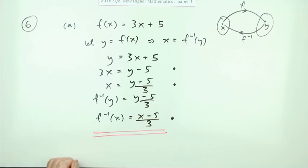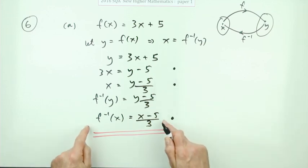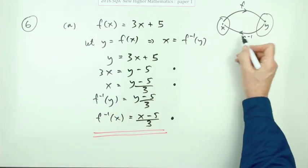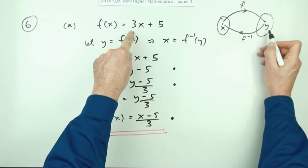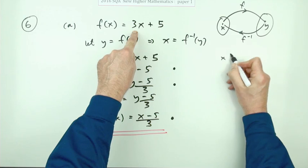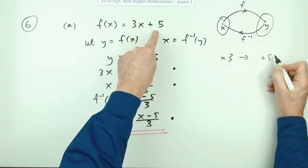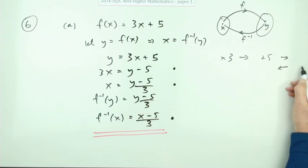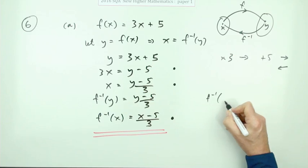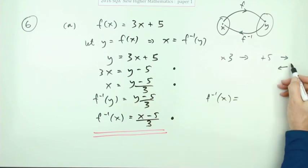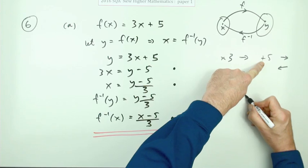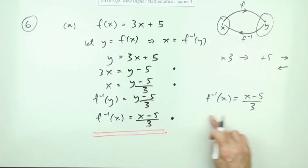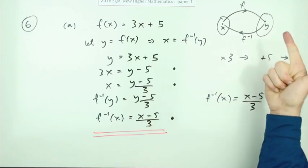If you simply stated the final answer with no working at all you would get 3 out of 3 — you can do that just by thinking about the operations. Whatever number you started with, you multiplied by 3 then added 5. So the inverse works backwards: undo add 5 by subtracting 5, then undo times 3 by dividing by 3. Thinking it through: times 3, add 5 — going backwards: subtract 5, then divide the whole thing by 3.